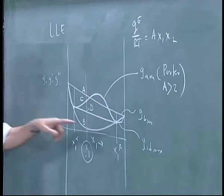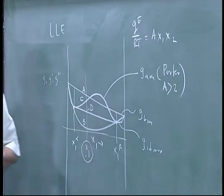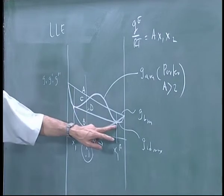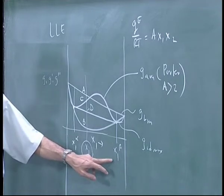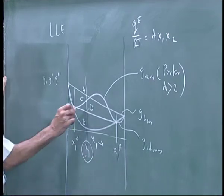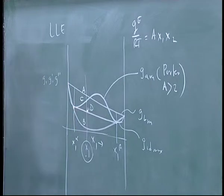In fact it is a geometric exercise to show that there exists a common tangent. But if you have a mixture of composition x1, one phase of composition x1 alpha, another phase of composition x1 beta and you have a mixture of these, the free energy would then be at D.